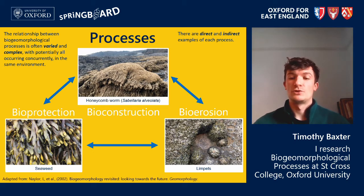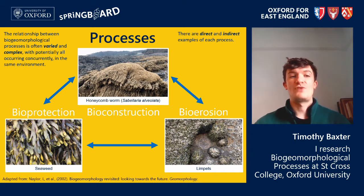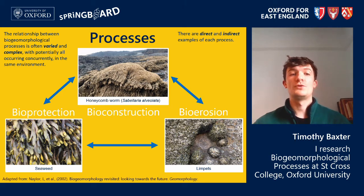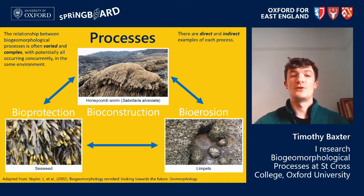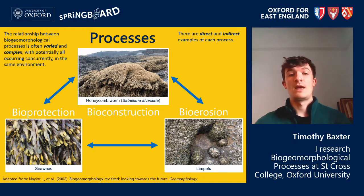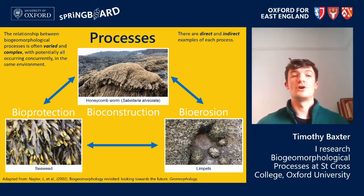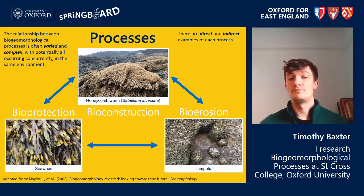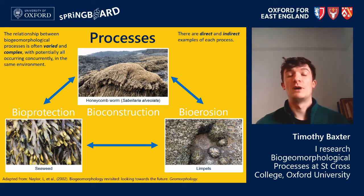There are three main biogeomorphological processes: bio-construction, bio-protection and bio-erosion. There are direct and indirect examples of each process, and the relationship between these processes is often varied and complex, with more than one often occurring concurrently in the same environment. For example, in a rocky coastal environment you may come across bio-constructions in the form of reefs created by honeycomb worms, as well as bioprotective organisms such as seaweed, and bio-erosive organisms such as limpets which graze and erode the surface of rock. Understanding how these processes work and their rate and magnitude in different environments is the primary aim of biogeomorphological research.